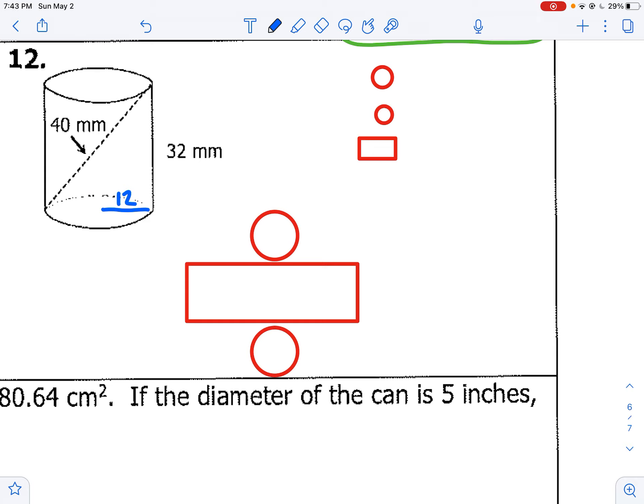Okay, so you should be done by now. If not, just pause the video. But each circle is going to be 12 squared times pi, or 144 pi. And then here, my base is 24 pi. My height is 32. 24 times 32. 768 pi. Add them all up. And you get 1,056 pi square millimeters.